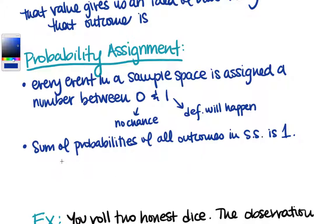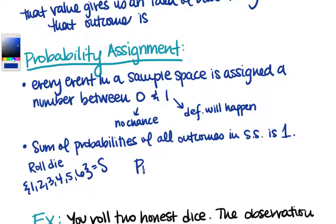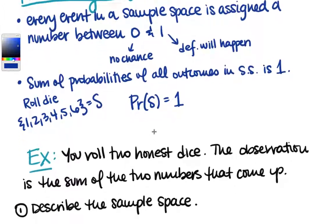If we look at rolling a die — 1 through 6 — the probability of the sample space S must equal 1, because these are all the possibilities. The likelihood that we get one of those possibilities — well, it's definitely going to happen. So the probability of the sample space is 1. Let's work with an example.